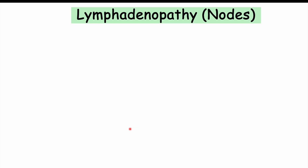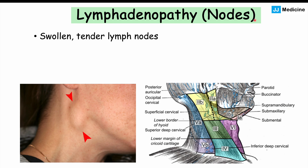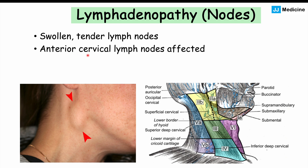We can also see lymphadenopathy — swollen, tender lymph nodes — especially in the anterior cervical chain. As shown in this image, a large swollen tender lymph node located anterior to the sternocleidomastoid muscle is something we can often see in this condition.